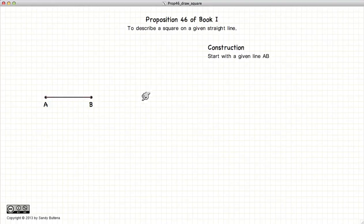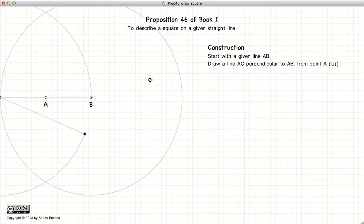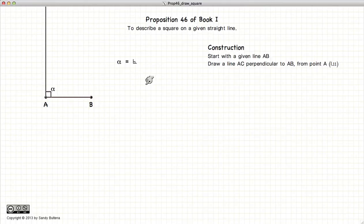The first thing we're going to do is to construct a line from the point A that is perpendicular to the line AB using the methods described in Proposition 11.